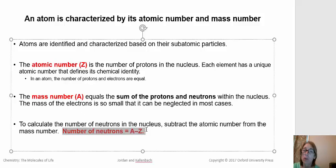So to calculate the number of neutrons, we subtract the number of protons, which is the atomic number or Z, which can always be found on the periodic table. We subtract that atomic number from the mass number.